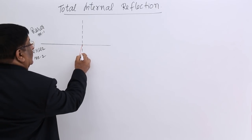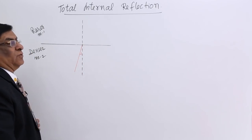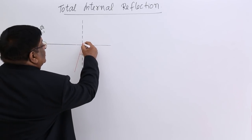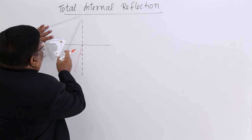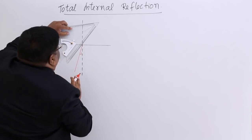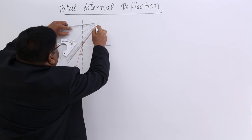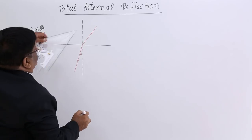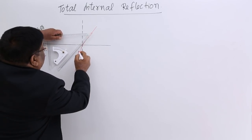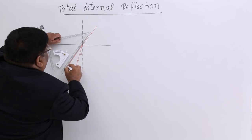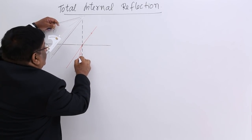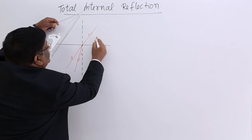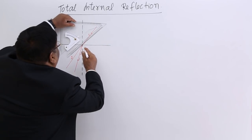If this is the angle of incidence, going from denser to rarer, the rule is it will move away from the normal. This is the normal, this is its original path, so it will move away. This is ray number 1. Ray number 2 moves further away from the normal.